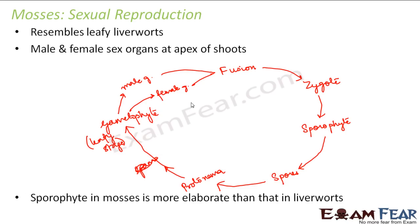The sporophyte in mosses is more elaborate than that in liverworts, because in mosses the sporophyte has a more distinct structure with three different parts. However, the dominant phase of the life cycle still remains the gametophyte.